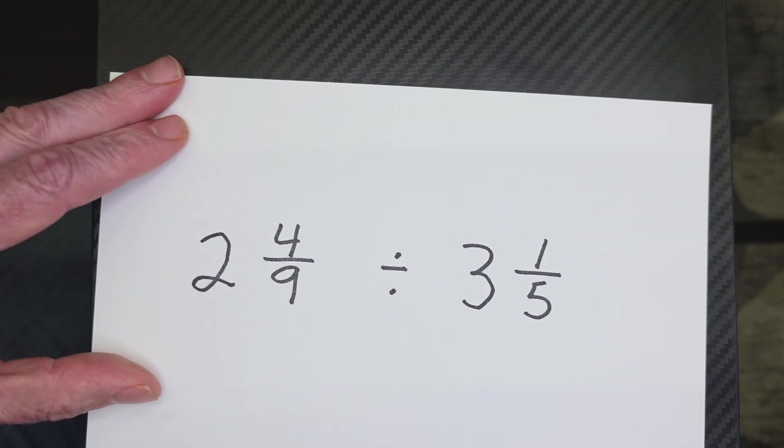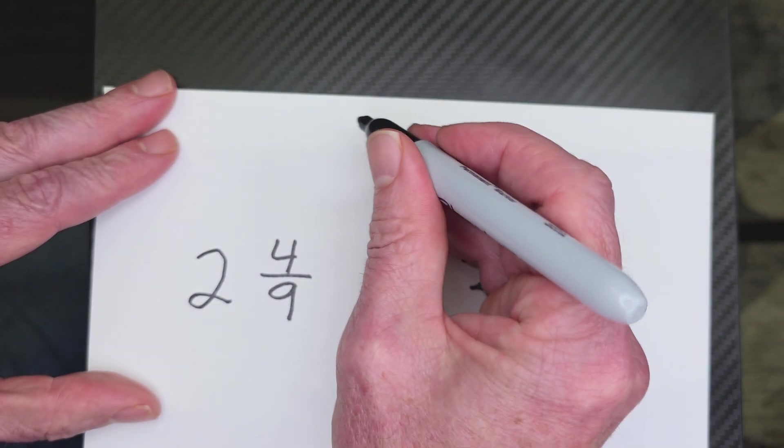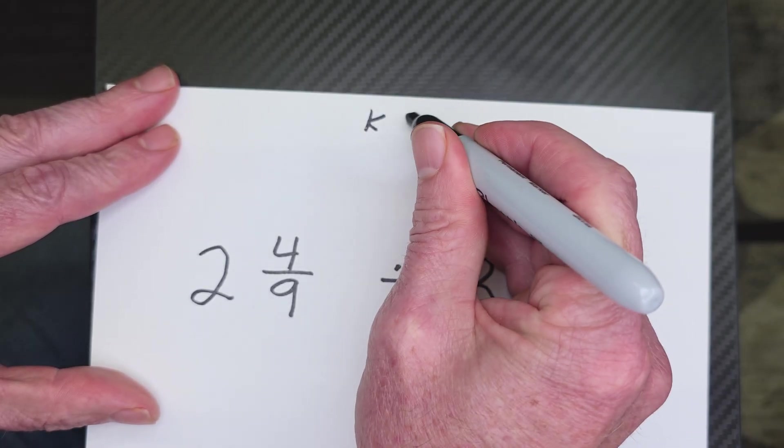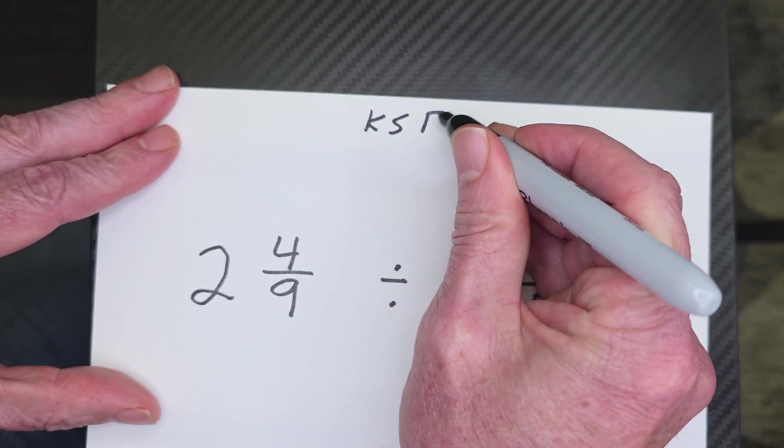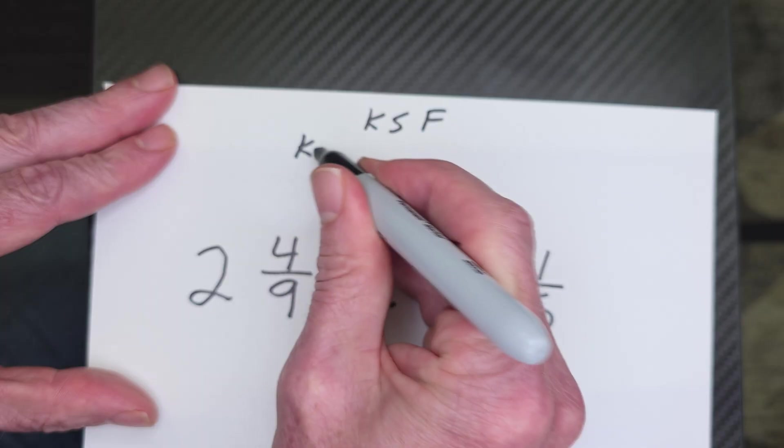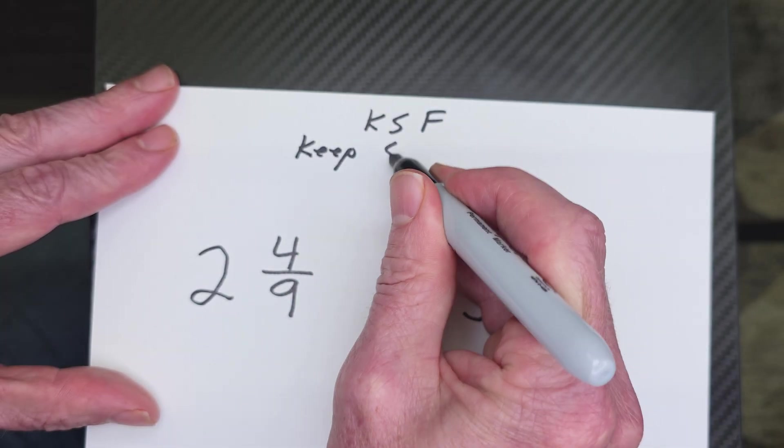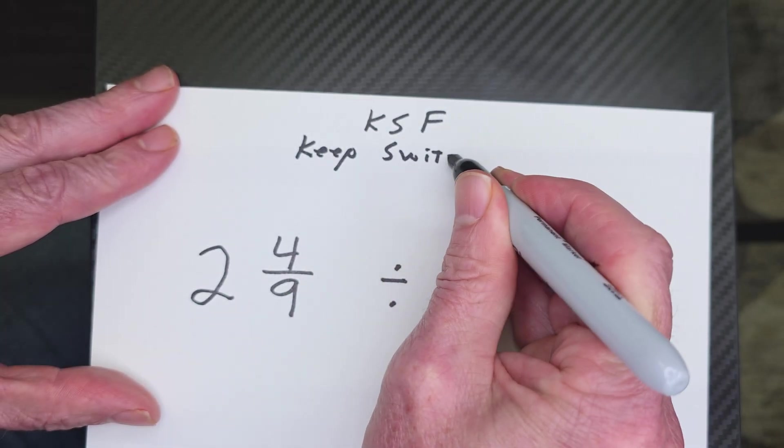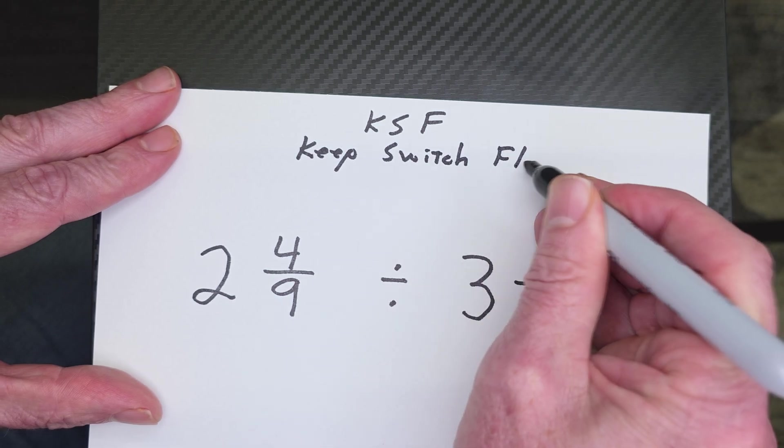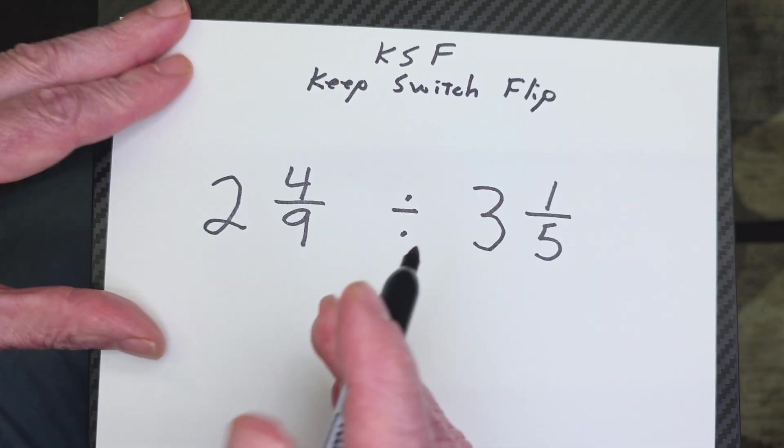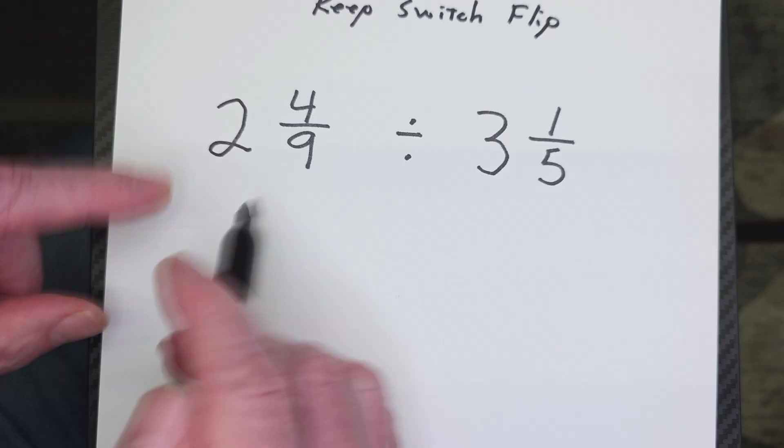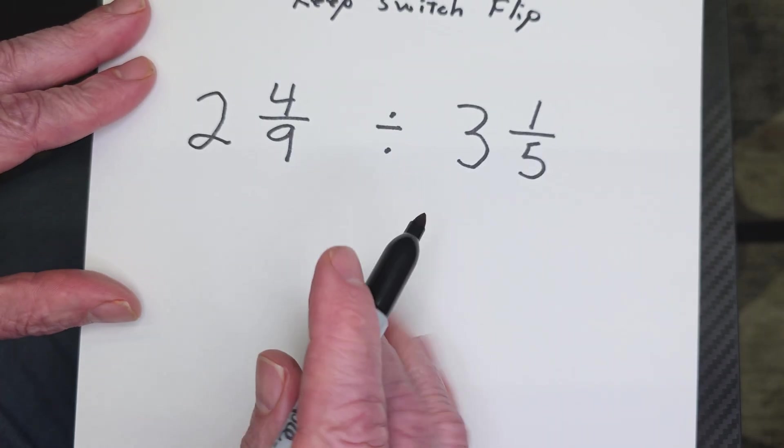All right. Again, let's get in the habit of doing that secret formula, KSF. What does that stand for? Keep, switch, and flip. Okay. Again, we need to turn them into an improper fraction.